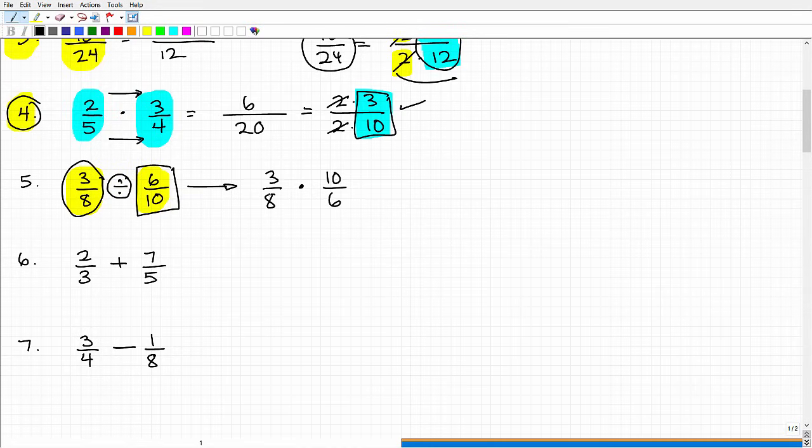Now I have a multiplication problem, so I'm going to do what I did in problem 4. I'm simply going to multiply the respective numerators and denominators. So 3 times 10 is 30, and 8 times 6 is 48. Then I would go ahead and simplify. I'm actually going to skip that right now because I want to try to finish this video in a pretty timely manner. However, we would want to simplify as I showed you in problems 3 and 4. Technically speaking, this is a correct answer.